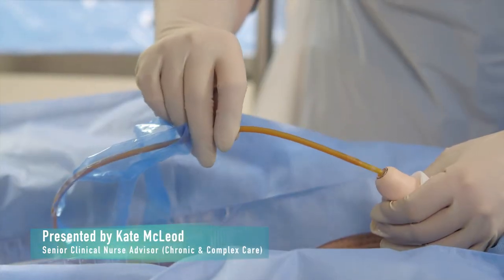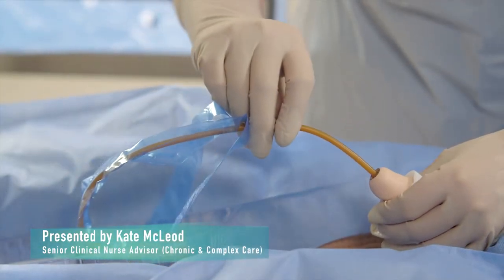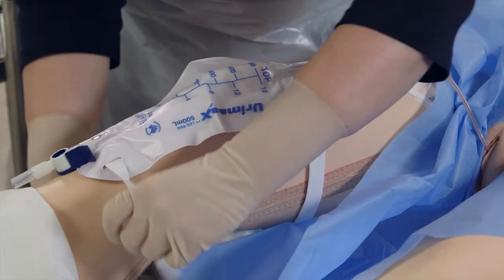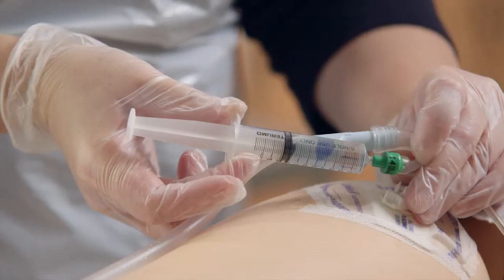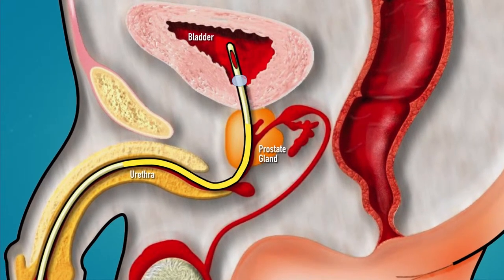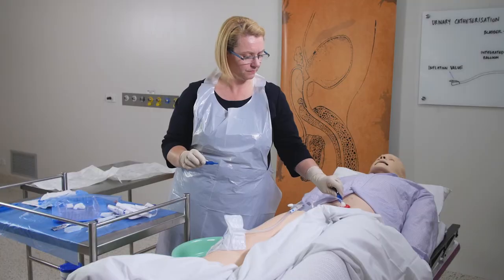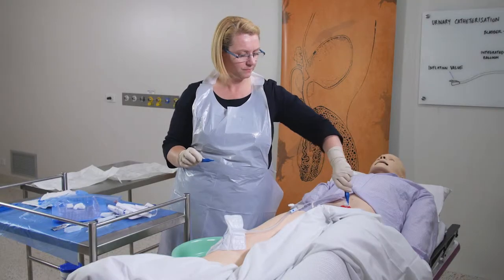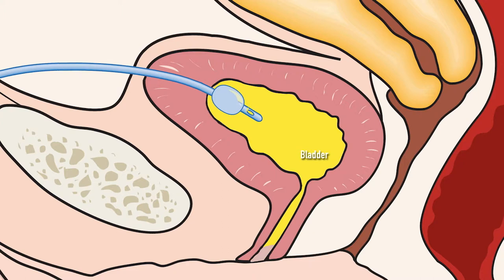A urinary catheter is a hollow tube inserted into the bladder to drain urine. Urinary catheterisation is the passage of a urinary catheter into the bladder via the urethra, which is called urethral or indwelling catheterisation, or through the abdominal wall. This is called suprapubic catheterisation.